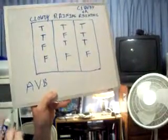It would be marked with an A and a V and a B. That's an inclusive disjunction.